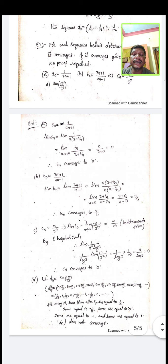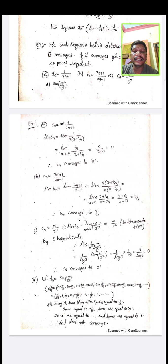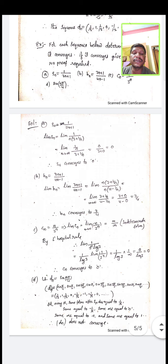For D_n = sin(nπ/4): D_n does not converge because it has no particular finite value. Sometimes S_n equals 1/√2, sometimes -1/√2, sometimes 0, sometimes 1, and sometimes -1. Therefore D_n does not converge.